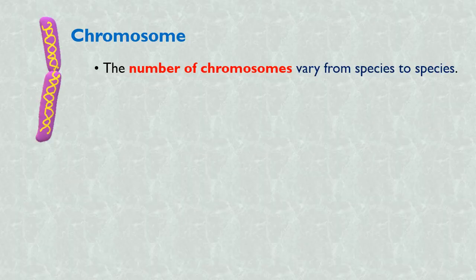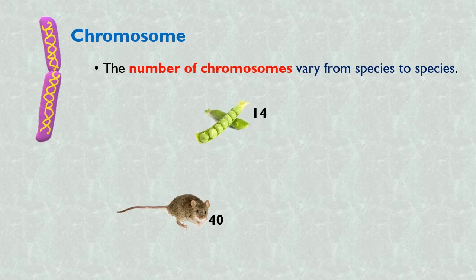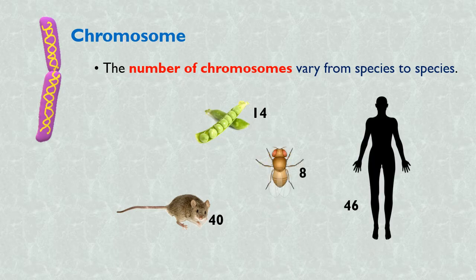The number of chromosomes may vary from one species to another. In fact, the number of chromosomes typically is characteristic of the species. For example, chromosome number in garden pea is 14, mouse has 40, Drosophila has 8, and humans have 46 chromosomes.